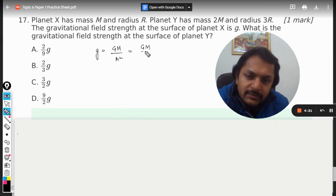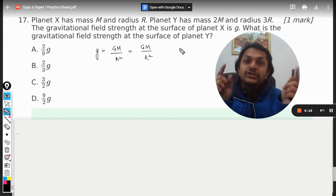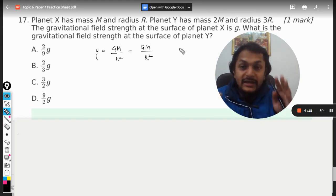so small r becomes equal to capital R. Small r is the distance between the body and the center of the earth—it includes the height also—but in capital R there is no height, h is 0.